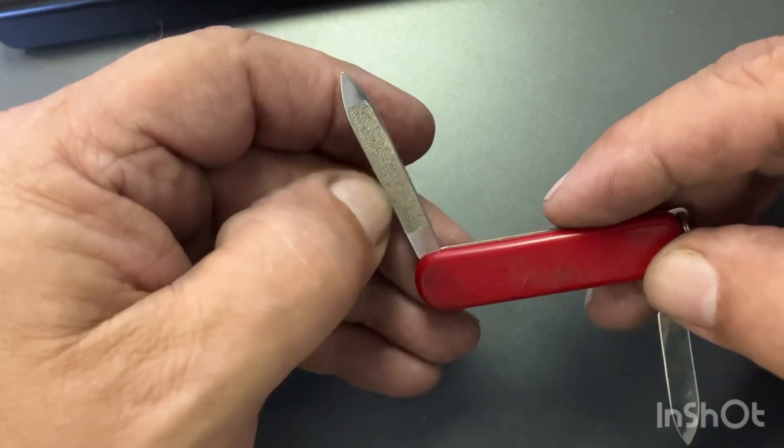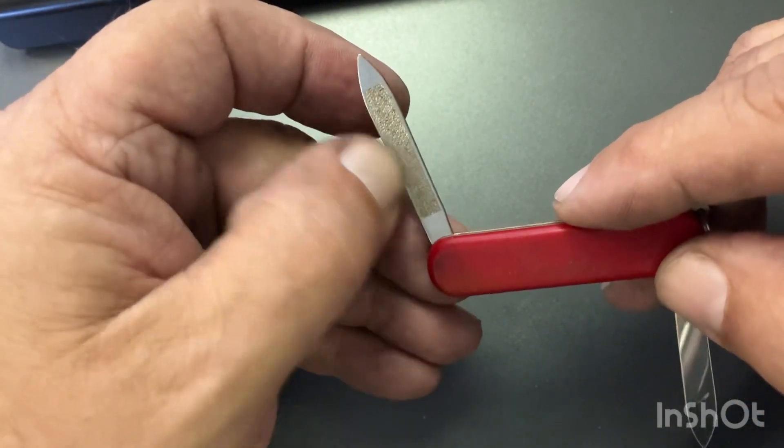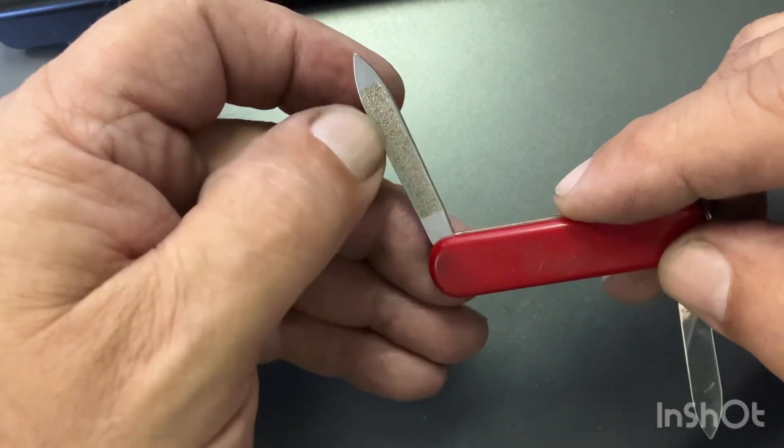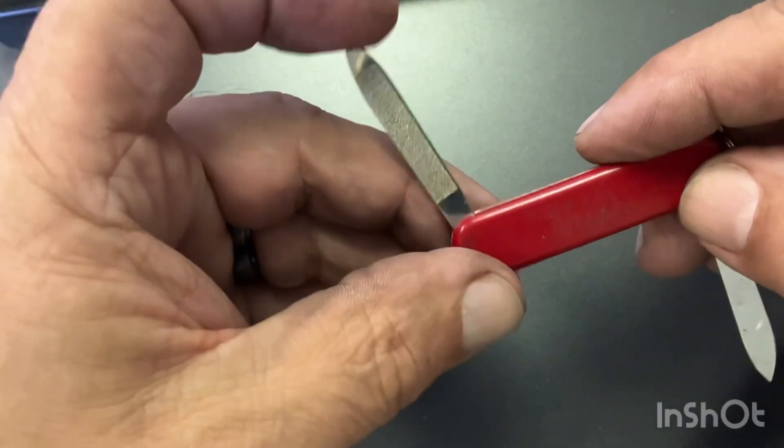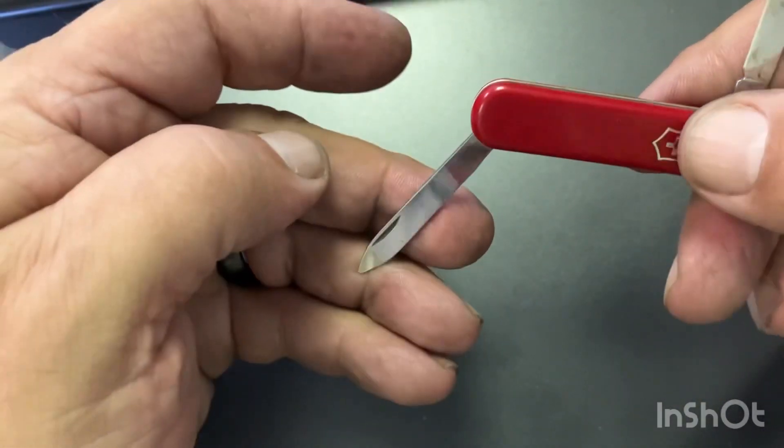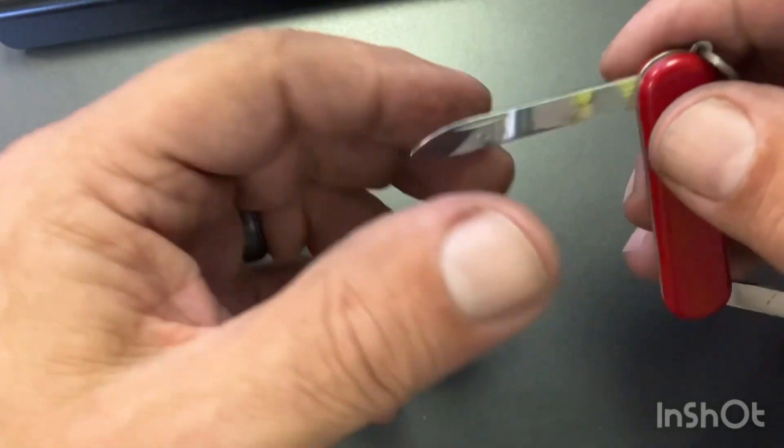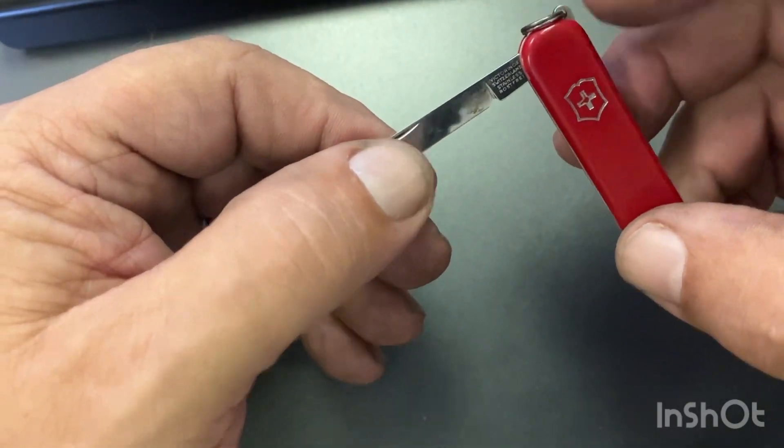It has a nail file. I said blade, I mean two implements. It has a nail file with a nail cleaner tip and it has a main blade and a key ring.